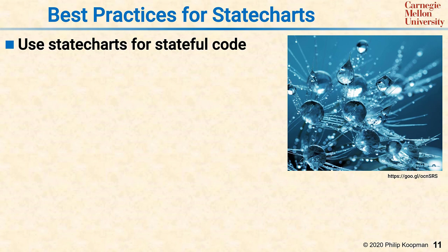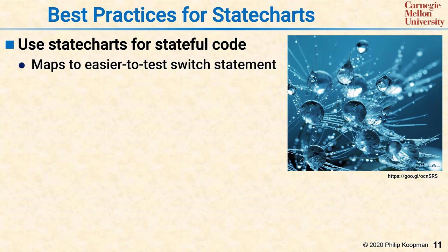There are a number of best practices for state charts. First and foremost, if your system has a stateful behavior, then you should be using state charts and not flow charts. In my experience, it's very common for embedded systems to have mostly stateful behavior. You press a button, or some input comes, and the system changes its behavior until the next input comes. That just screams state chart, not flow chart. State charts have an advantage that they map to an easier-to-test and easier-to-review switch statement, which is generally a lot easier to understand and get right than a bunch of nested ifs that you can get from a flow chart.